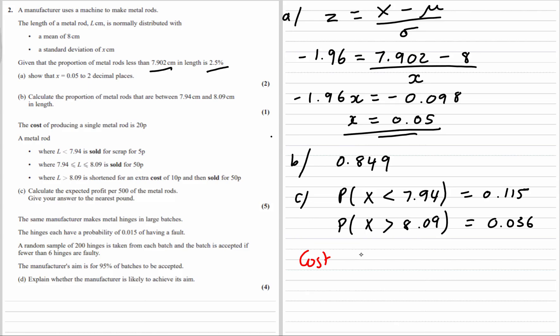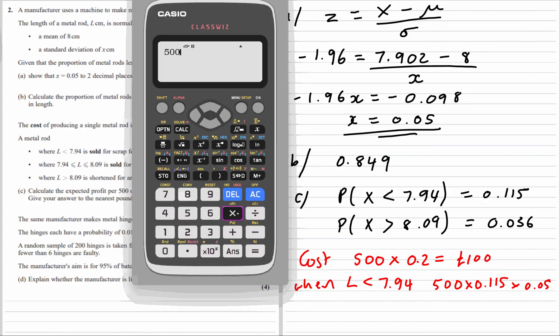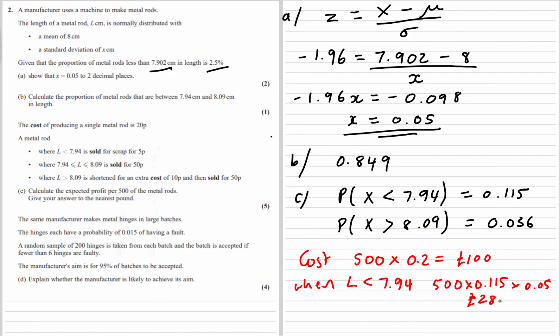Calculate the expected profit per 500 rods. So the cost producing 500 is going to be 500 times 20p. That's going to be 100 pounds. So 500 times 0.115 times 5p. That's 2.875. I'll just use that whole number for now.